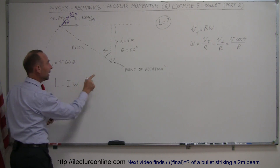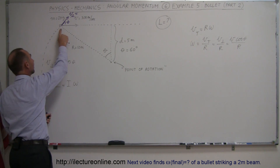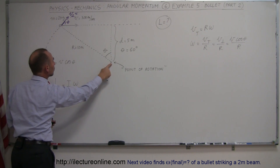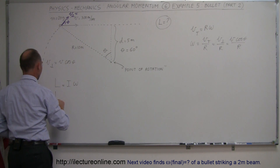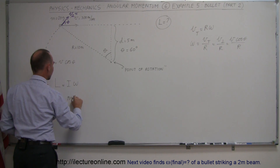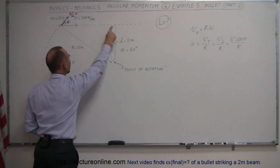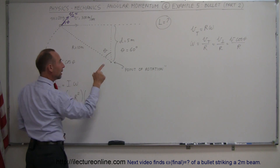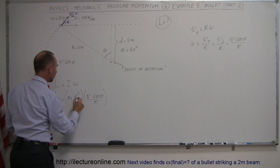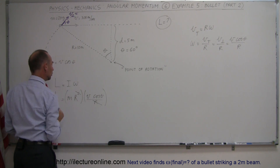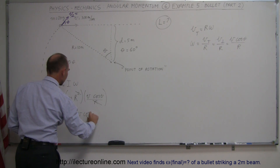Angular momentum equals I times omega. We found omega. What is I? The moment of inertia is simply equal to mass times the radius of its motion squared — m times r squared. So L of the bullet equals the mass of the bullet times r squared times omega, and omega is v times cosine theta divided by r. Notice this r cancels one of those, and so the angular momentum equals m·r·v·cos(θ).